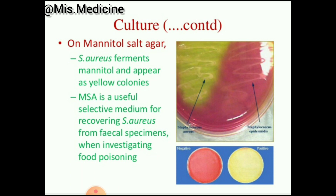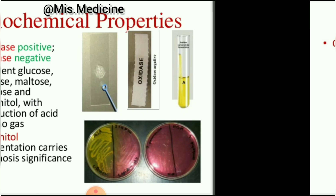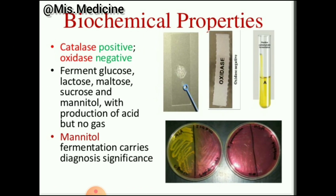On mannitol salt agar, Staphylococcus aureus ferments mannitol and appears as yellow colonies. MSA is a useful selective medium for recovering S. aureus from fecal specimens when investigating food poisoning.